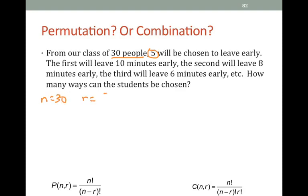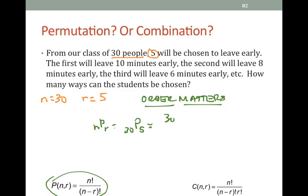Again, n is 30, r is 5. Use the permutation formula, because order matters. So we're going to go 30, choose 5. It's a permutation of 30, choose 5. Plug that one in your calculator if you want, but you're going to get a really big number. 17,100,720. That's a lot of ways that kids could leave a classroom.